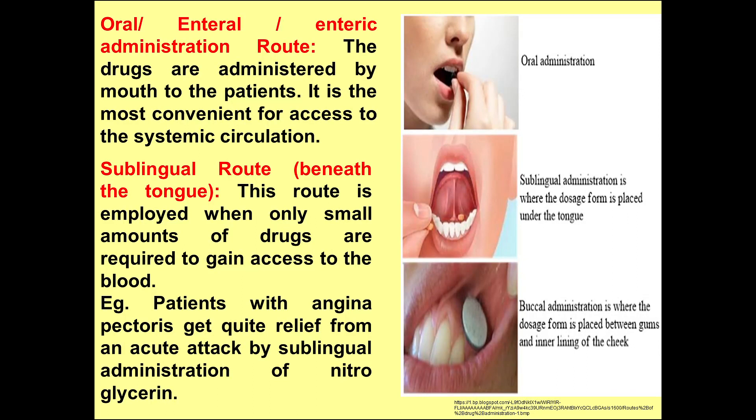Next comes the sublingual route, which also comes under the category of enteral route. Sublingual route is beneath the tongue where the drug is administered. This route is employed when only small amounts of drugs are required. For example, patients with angina pectoris — a heart disease — can get quick relief from an acute attack by this mode of administration. Particularly, nitroglycerin drugs are used in this case. Buccal administration also comes under this category, where the dosage form is placed between the gums and the inner lining of the cheek.